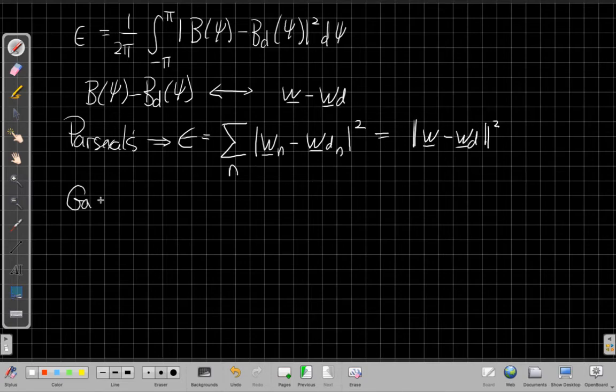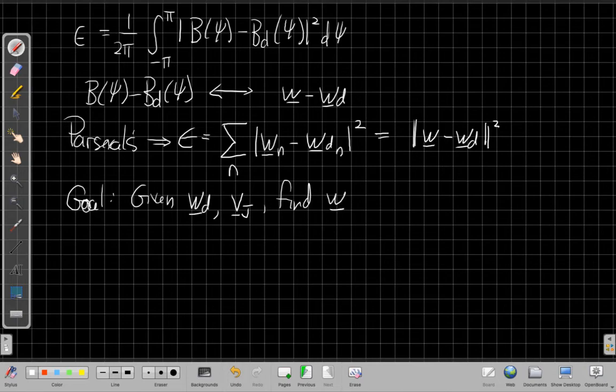So what we have now is we say I want to minimize this error subject to a constraint. Now if I come back to my original goal, in these linear algebra terms, I want to find, to be clear what I'm given first. Given my desired weight vector and the jamming manifold vector, I'm going to find W. My goal is to find W to minimize this error.